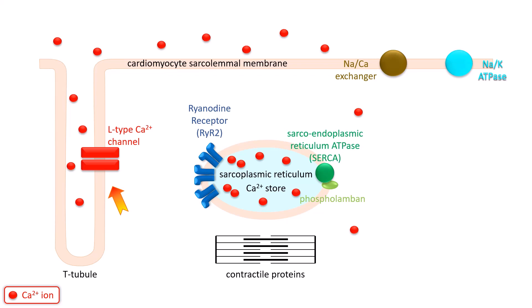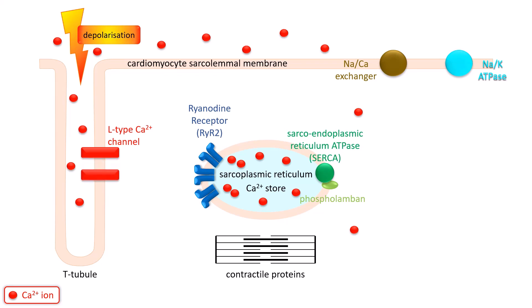When the muscle cell fires an action potential, the calcium channels open and allow calcium ions to enter the cell. This calcium is not enough by itself to evoke contraction — its main role is to bind to ryanodine receptors on the sarcoplasmic reticulum.